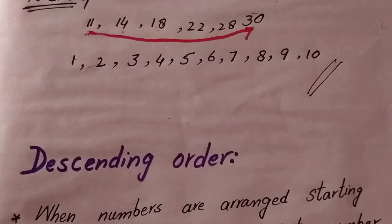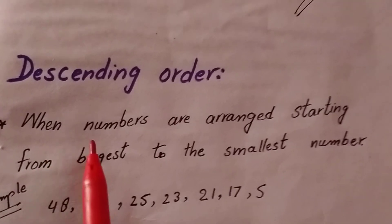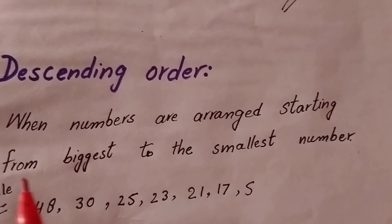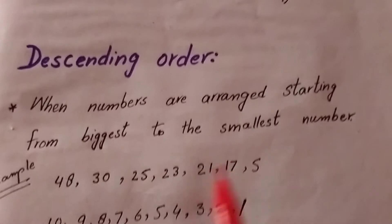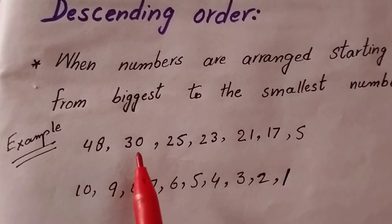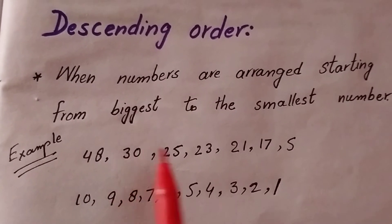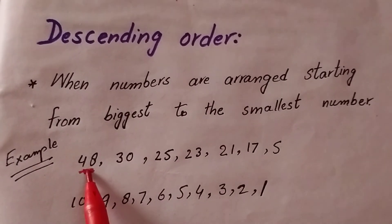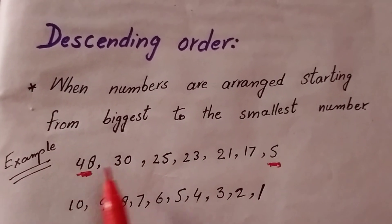Descending order: numbers are arranged starting from the biggest to the smallest number. For example: 48, 40, 30 — 40 is greater than 30, then 25, 23, 21, 7 — biggest to the smallest. 5 is smallest of all the numbers.